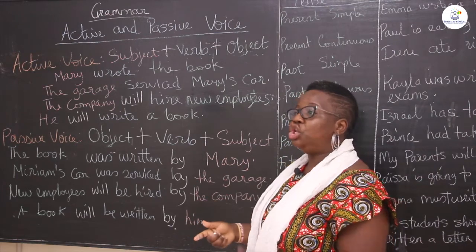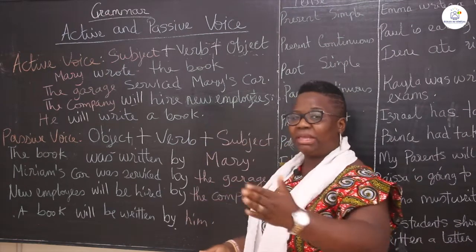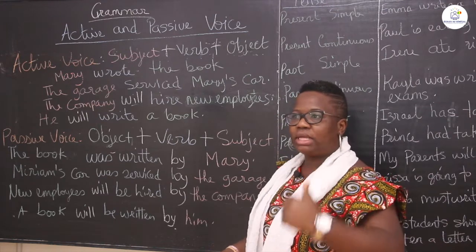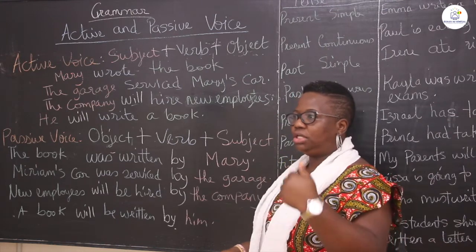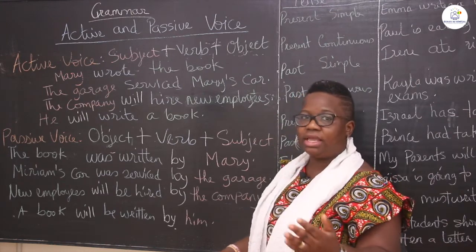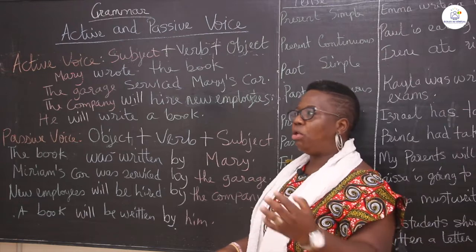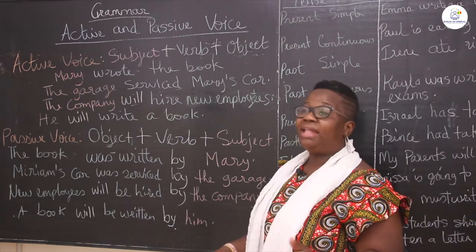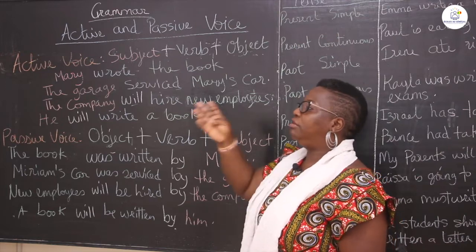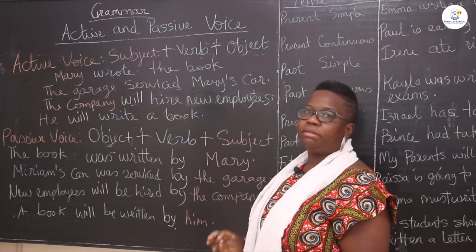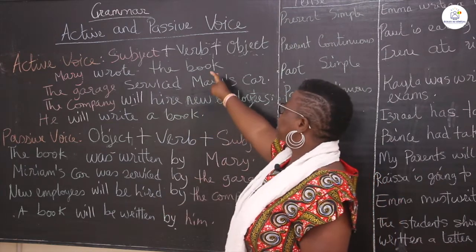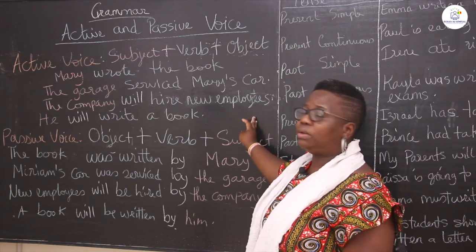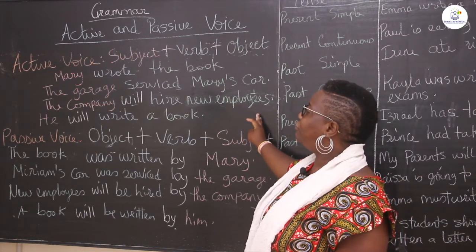In active voice, you always have the subject at the beginning. You need to know the personal pronouns — I, you, he, she, we, they — the subject, Paul, Mary, Rita — at the beginning. And then you need to have the verb in the middle; the verb is always in the middle. And the last part is the object. That is an active voice.